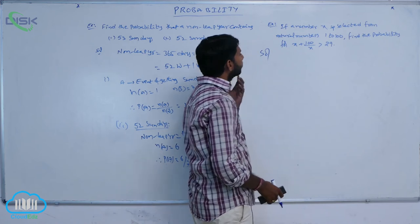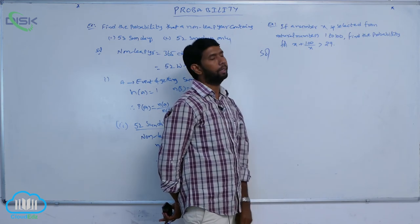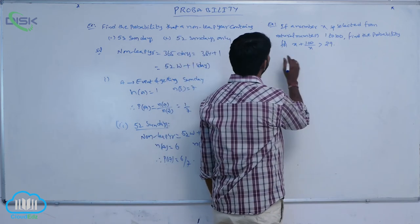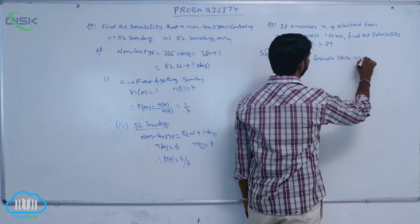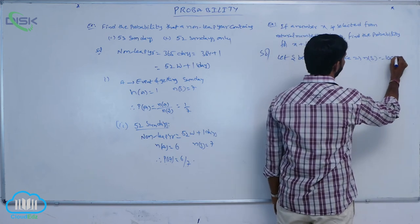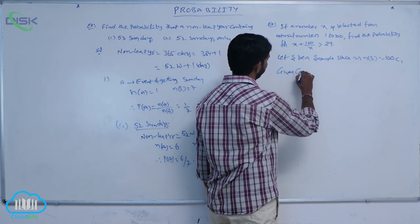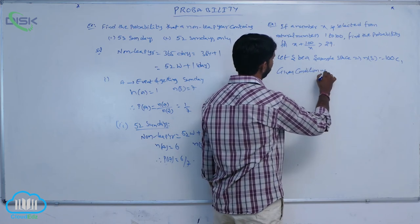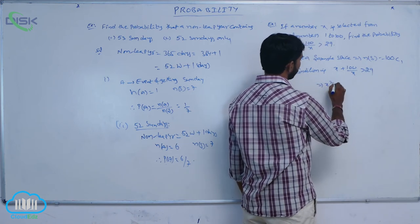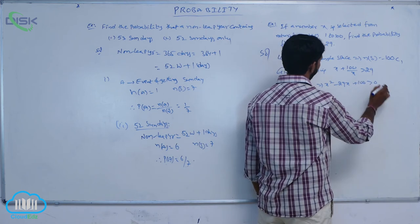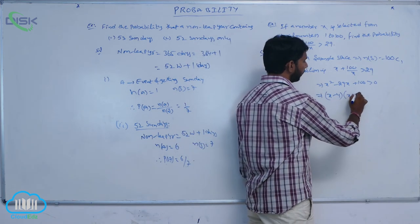If a number x is selected from natural numbers 1 to 100, find the probability that x + 100/x is greater than 29. The sample space n(S) = 100C1 = 100. The given condition x + 100/x > 29 simplifies to x² - 29x + 100 > 0, which factors as (x - 4)(x - 25) > 0.